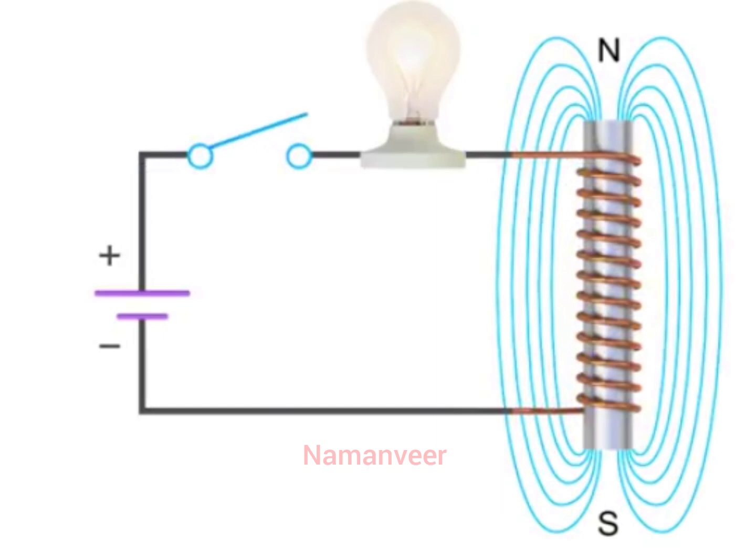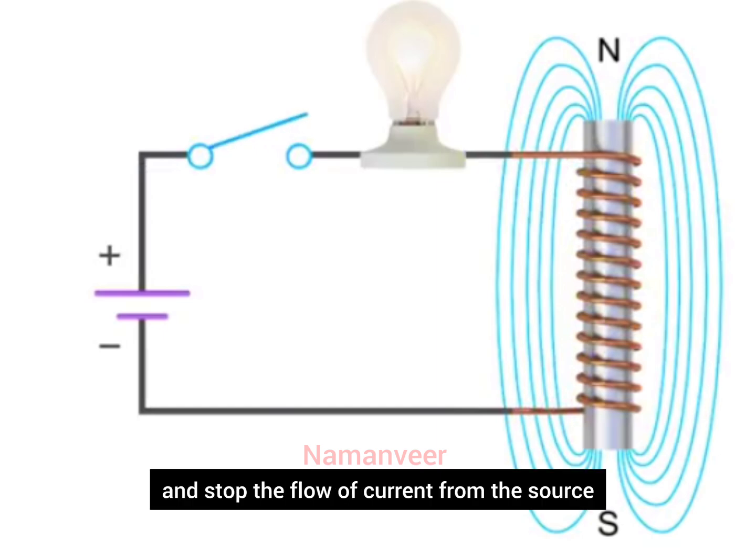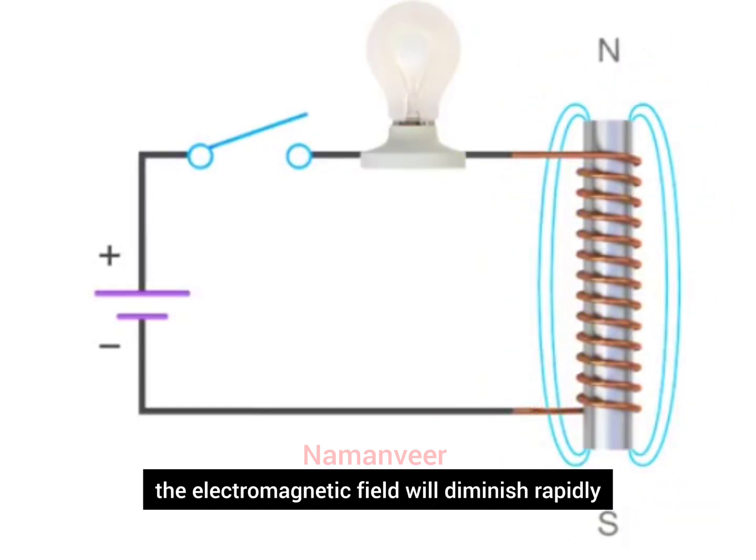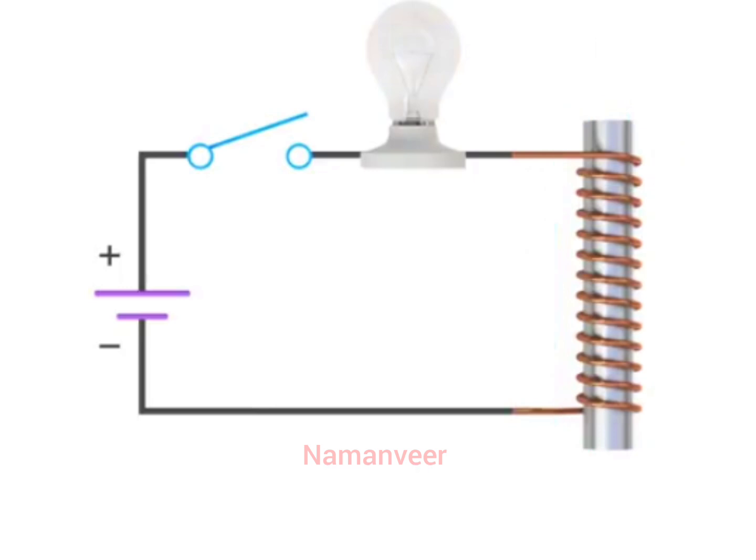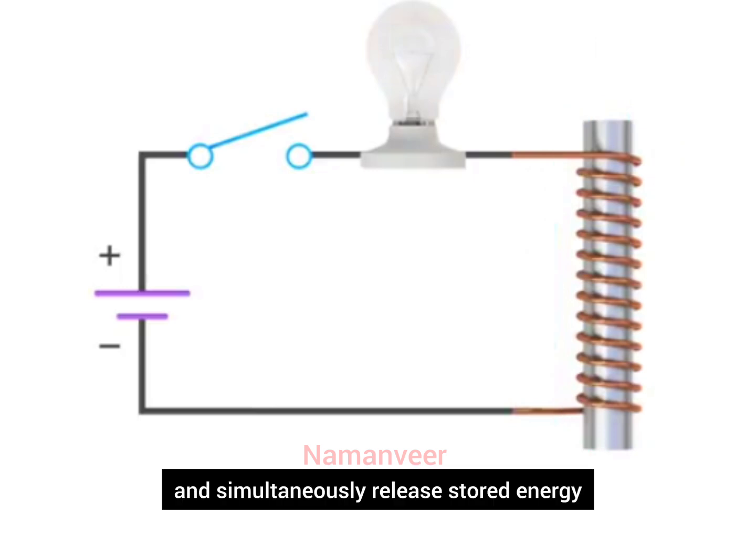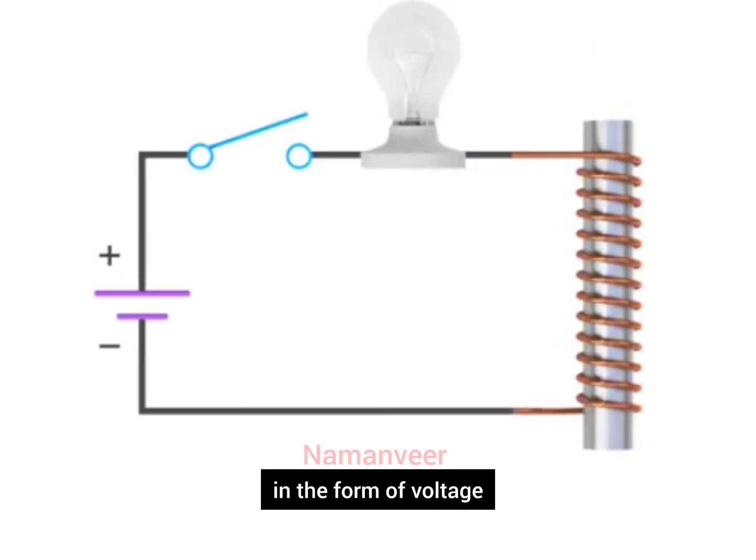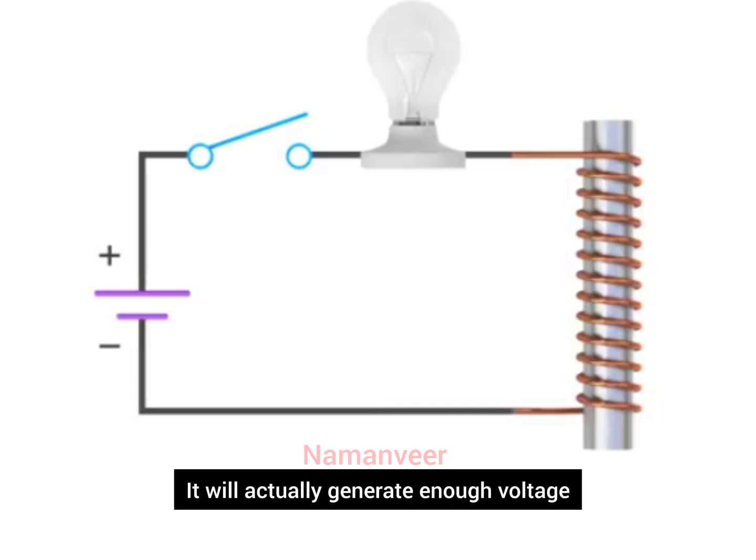If you open the switch and stop the flow of current from the source, the electromagnetic field will diminish rapidly and simultaneously release stored energy in the form of voltage. It will actually generate enough voltage to cause a spark across the switch as it opens. Whereas a capacitor uses voltage to store energy, the inductor uses current.